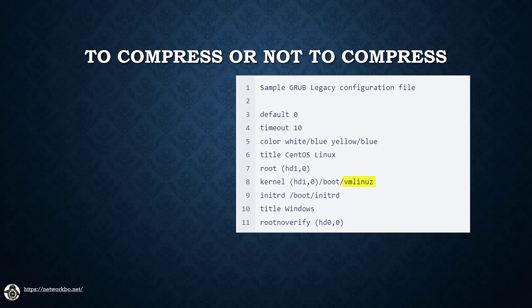What we have here is a sample of a GRUB legacy configuration file. From the example, the kernel file name was called VMLINUZ. The Z at the end of the file name indicates the kernel is compressed using the BZIMAGE compression method. This is a common method used by most Linux distributions. Kernel files that aren't compressed are usually called VMLINUX.